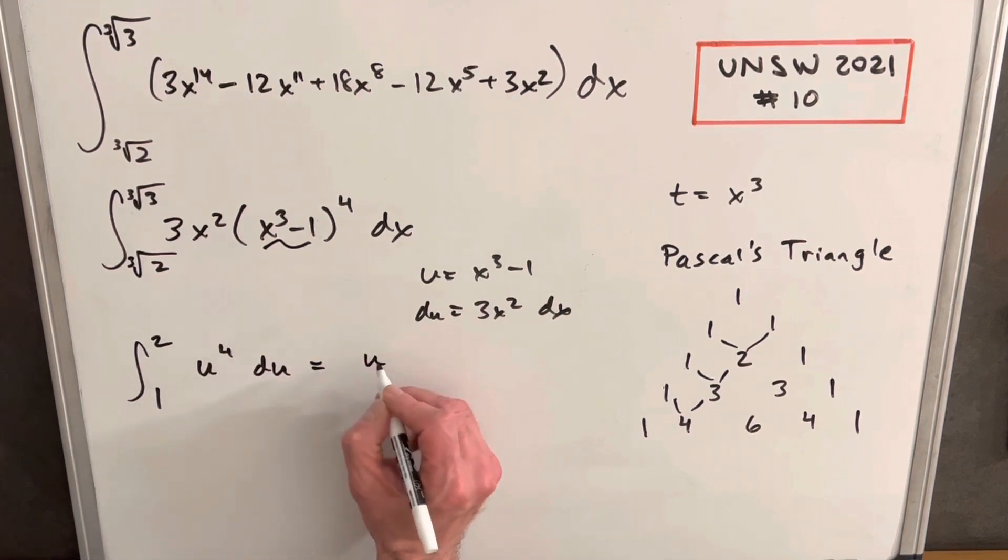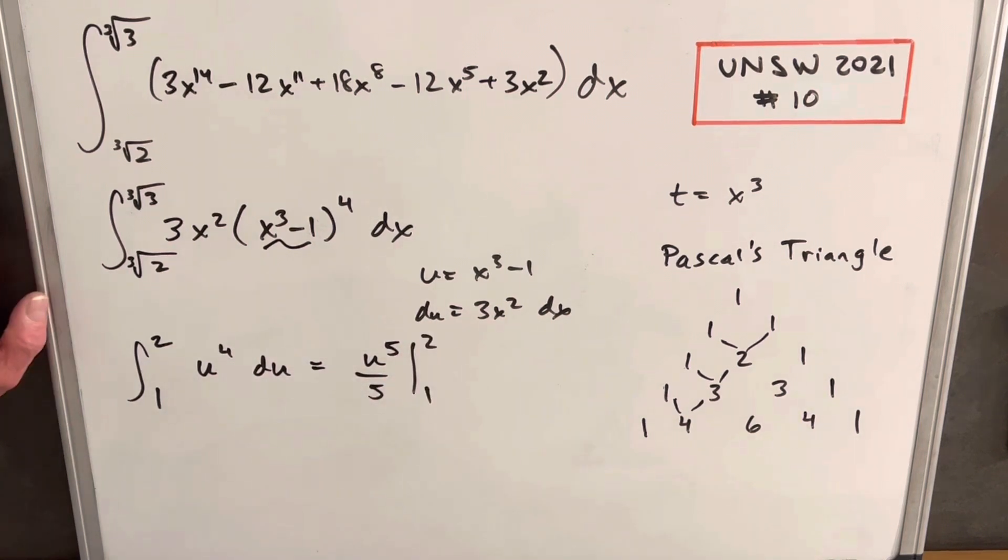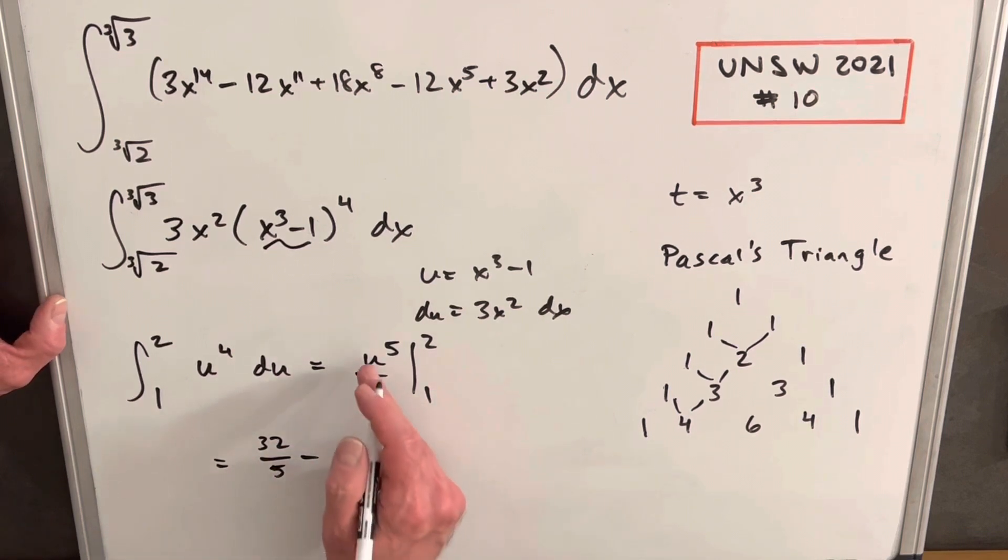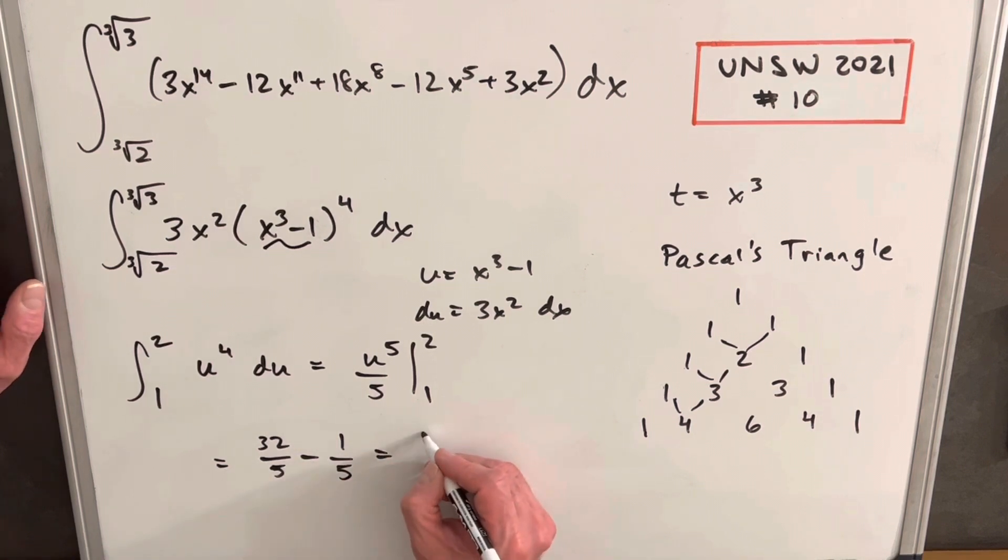So integrating this, we're going to have just u to the 5th over 5. Then let's plug this in and evaluate it. So 2 to the 5th is going to be 32 over 5 minus 1 to the 5th is just 1 over 5. So for our final answer, we end up with 31 over 5.